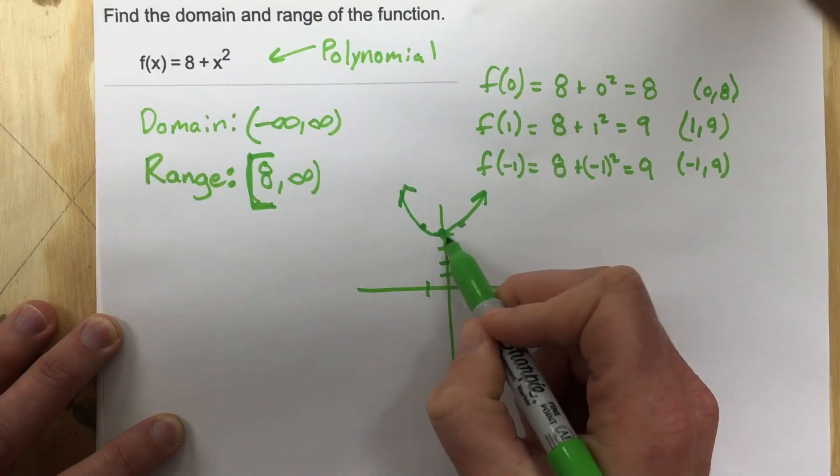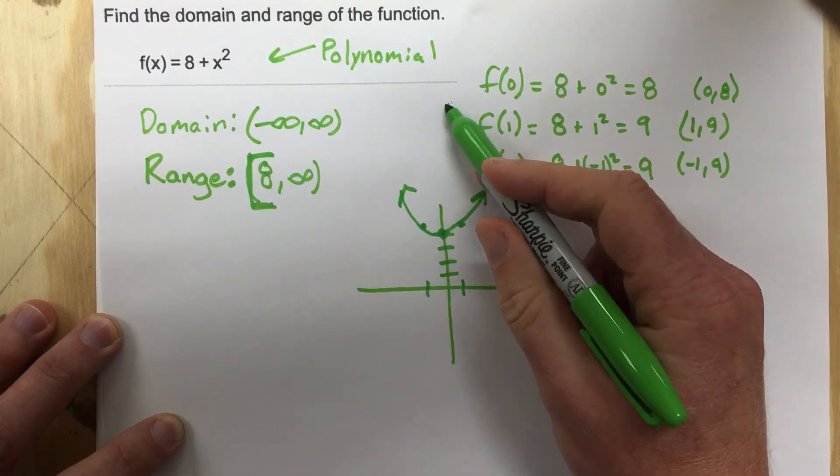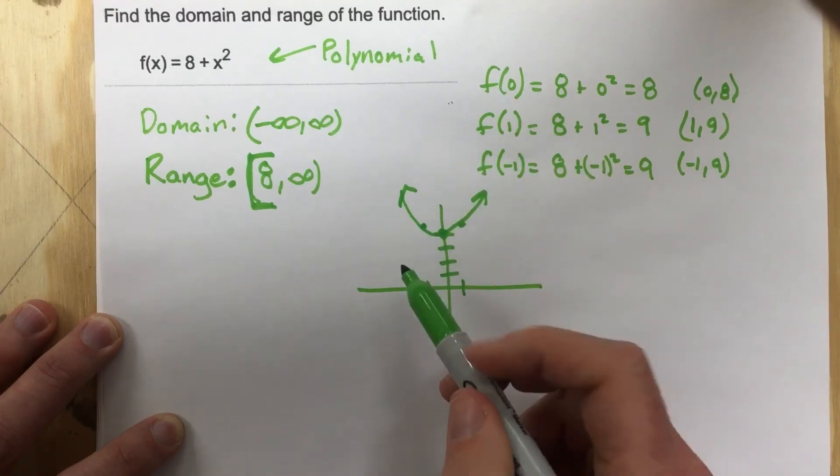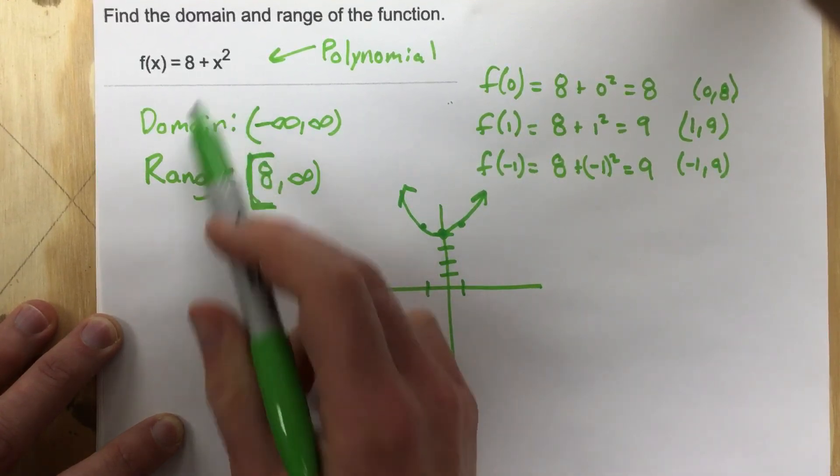So you can see our range is going to go from 8 all the way up to infinity. That's what the y values are. And the domain can be any x value because you can plug anything into a polynomial.